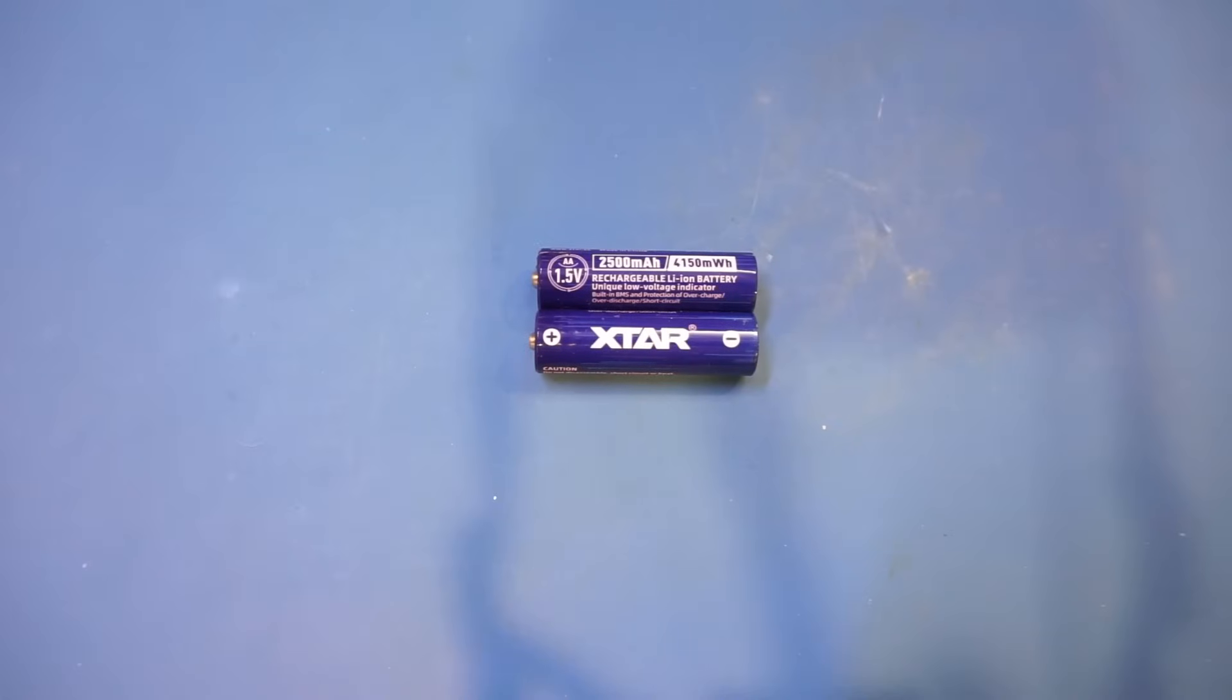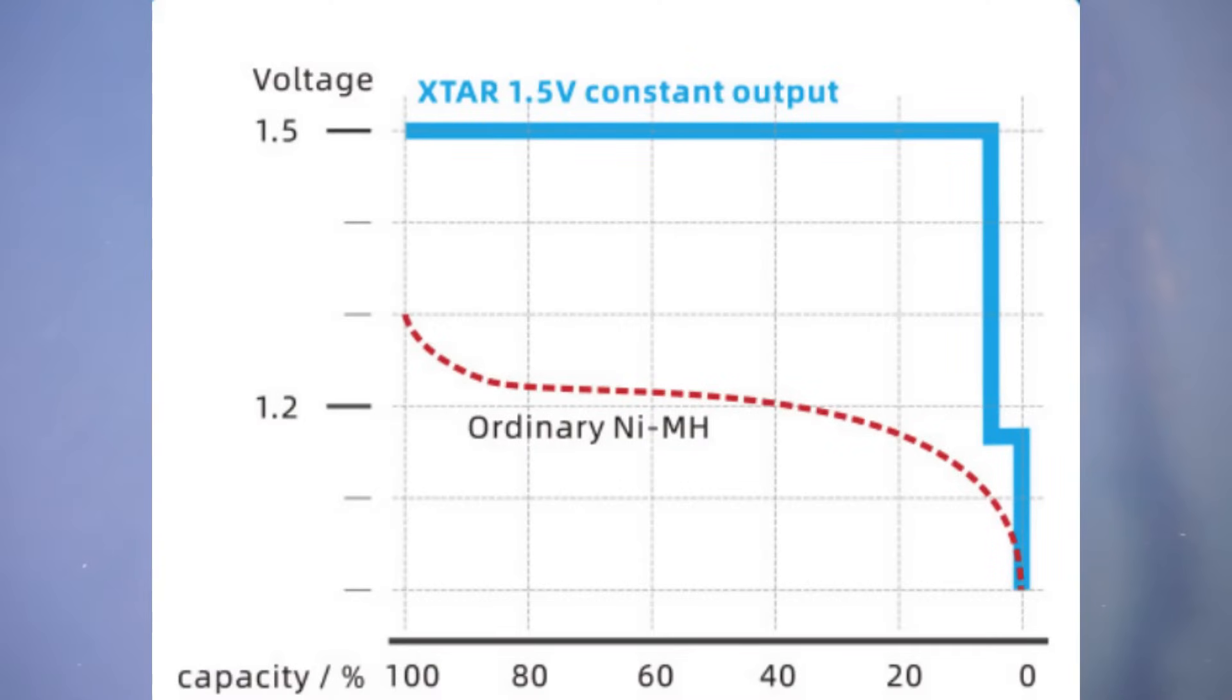Anyway, one of the main benefits of using a DC to DC converter to step down the voltage is that they can regulate the voltage and make the voltage almost constant during the discharging cycle. And you can clearly see this in the chart provided by XTAR.